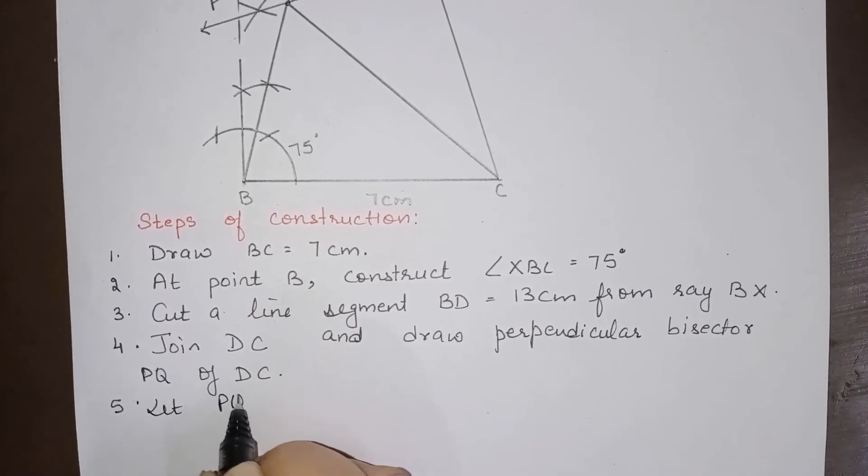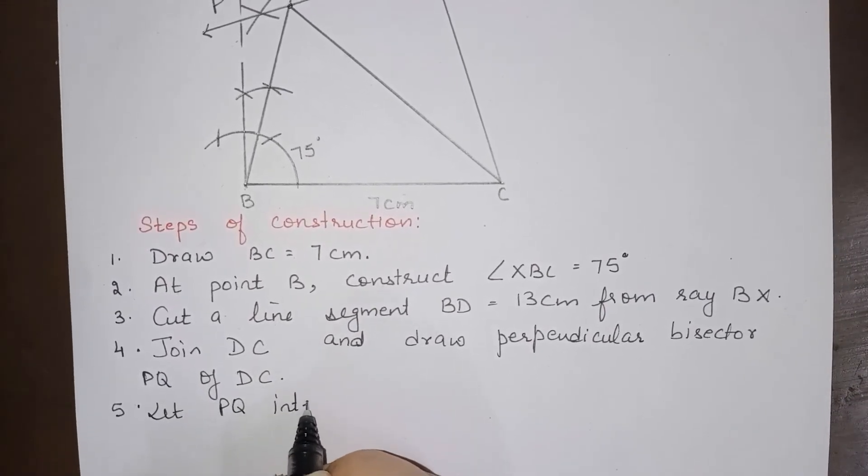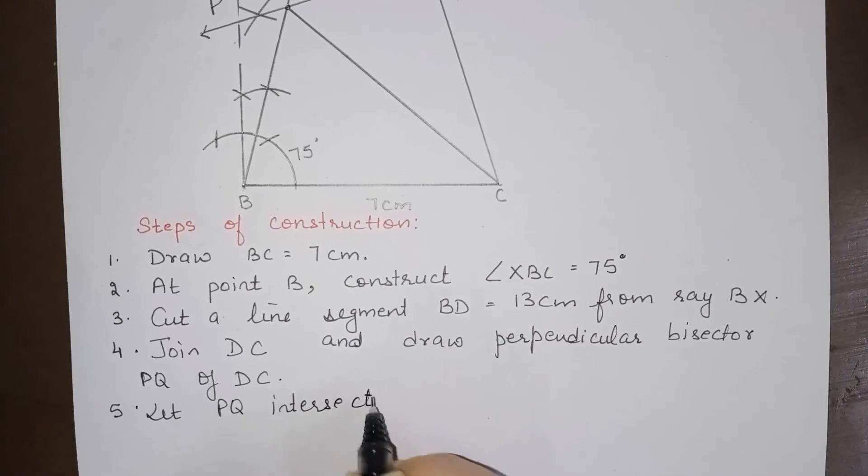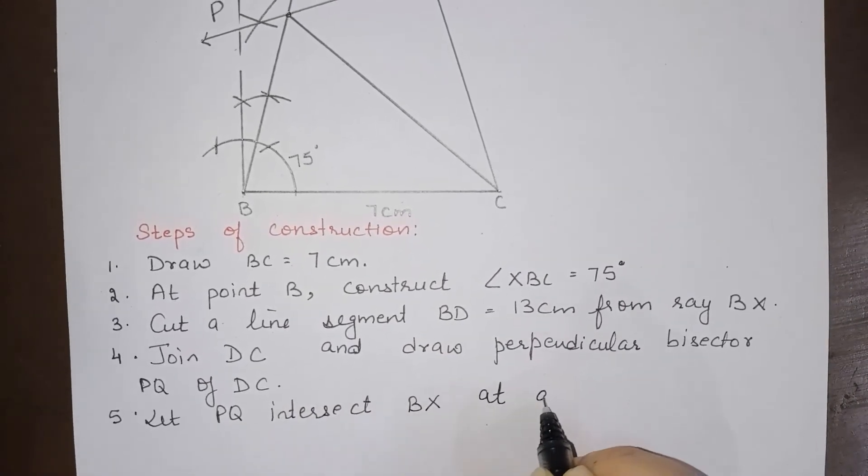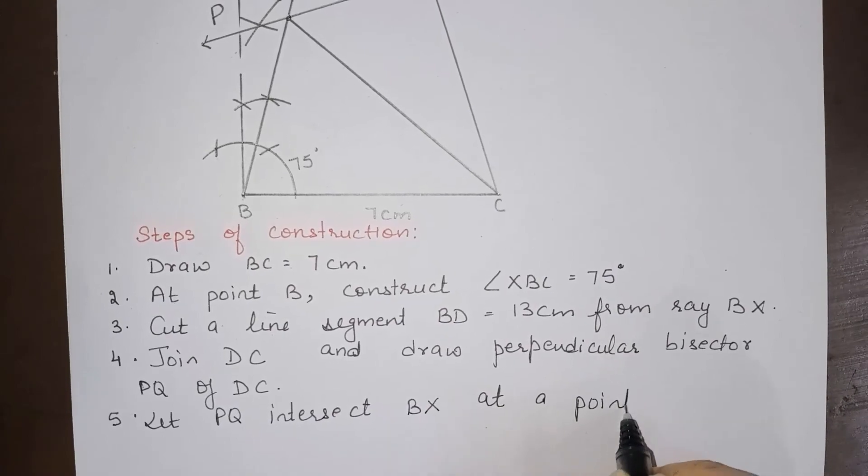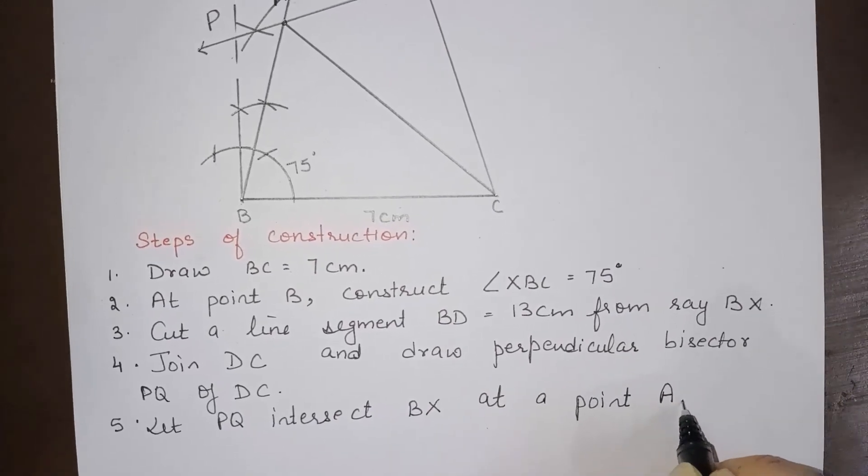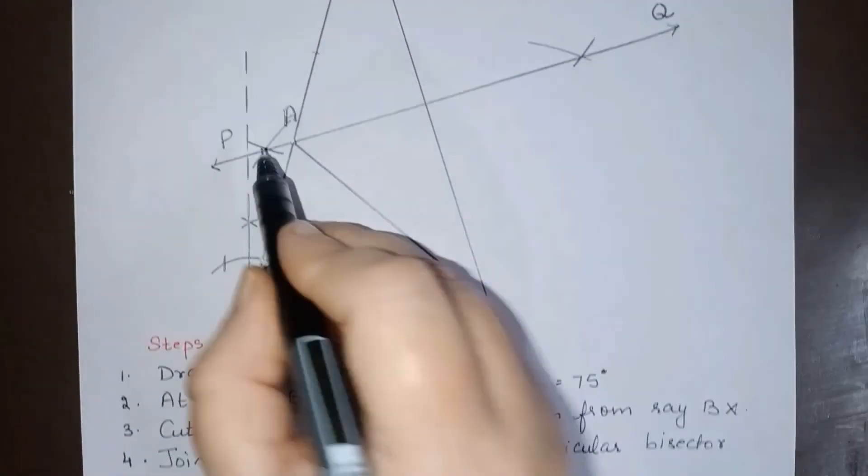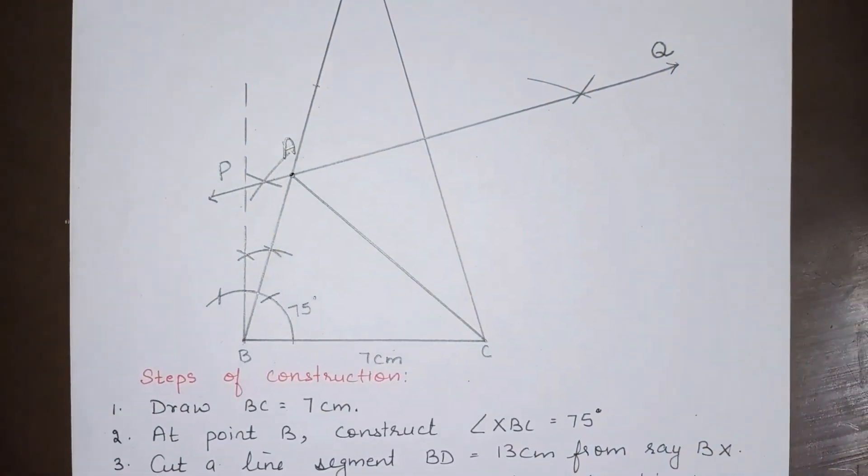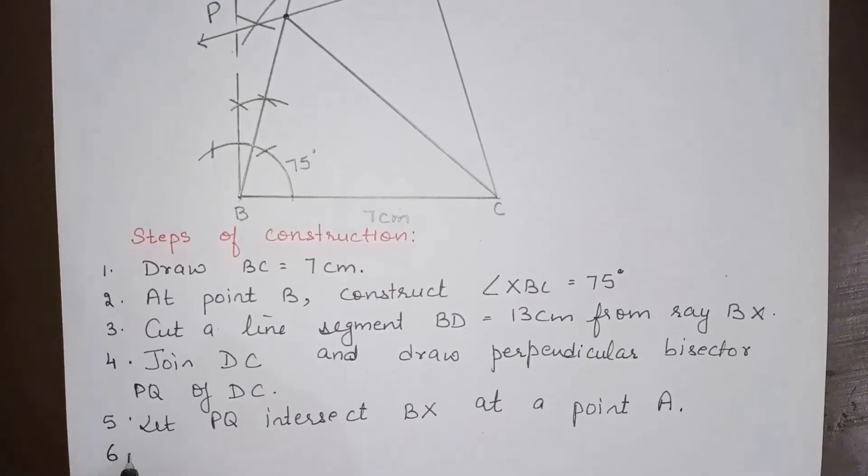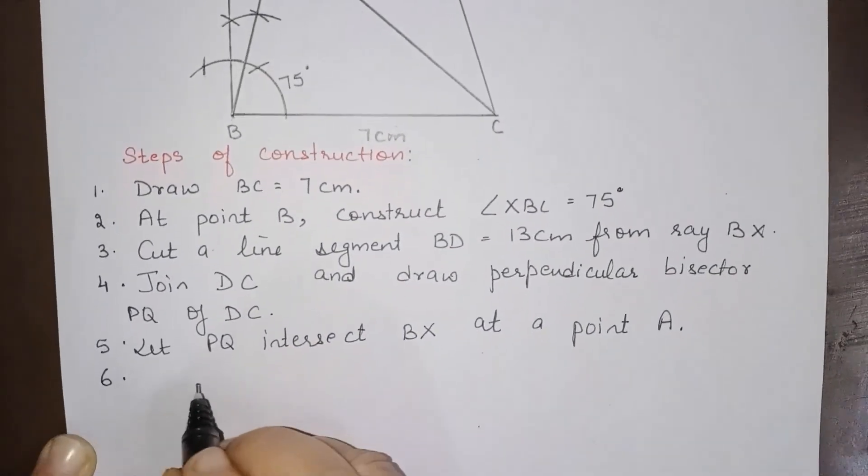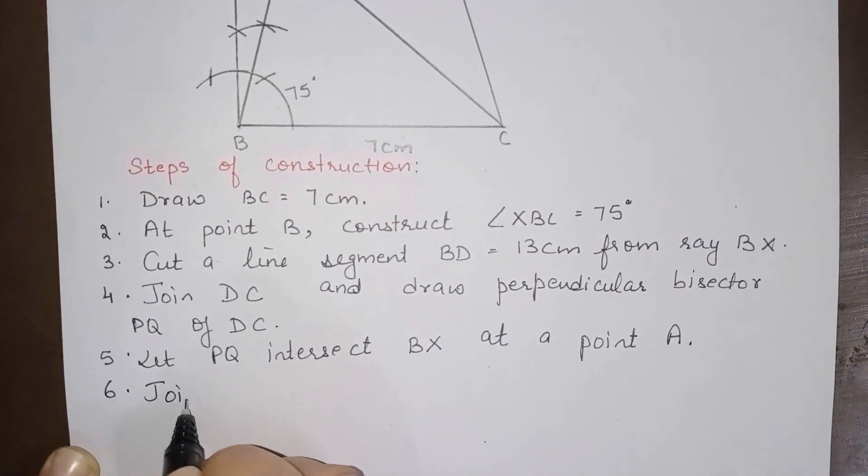Let PQ intersect BX at a point, point A. PQ is intersecting BD at point A, or BX at point A. Next point will be join AC.